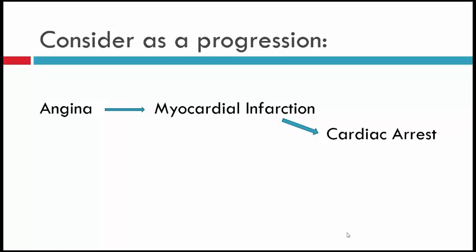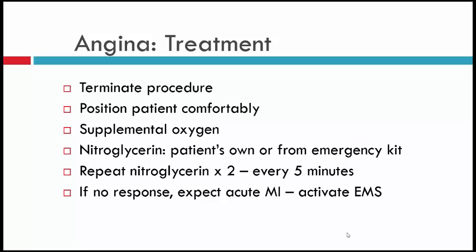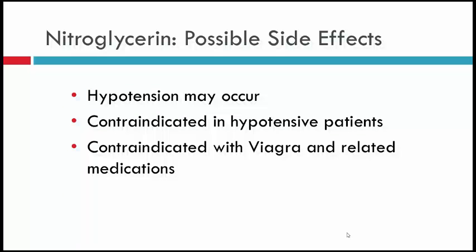We have to think about the progression from angina to myocardial infarction and potentially to cardiac arrest. With angina: terminate the procedure, position the patient comfortably, give supplemental oxygen, and administer nitroglycerin — either the patient's own or from the emergency kit. Nitroglycerin can be repeated up to three times every five minutes. If there's no response, activate EMS immediately. Important contraindications: nitroglycerin may cause hypotension and is contraindicated with Viagra and related medications.